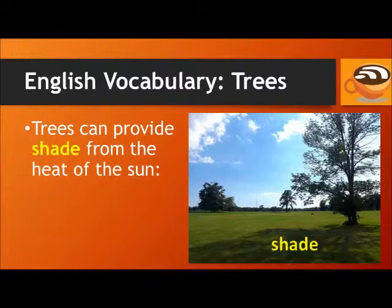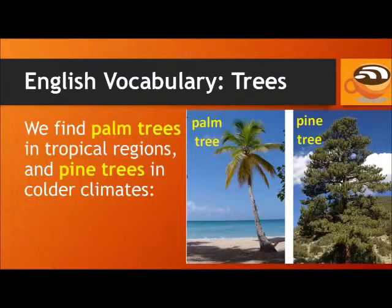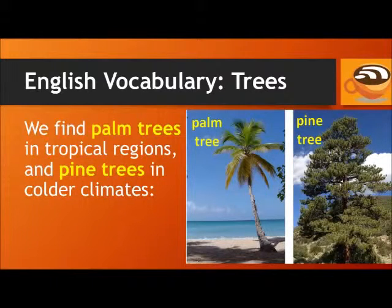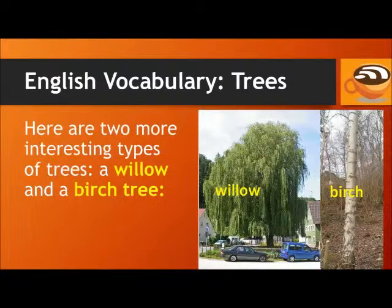Trees can provide shade from the heat and light of the sun. We find palm trees in tropical regions, and pine trees in colder climates. Here are two more interesting types of trees: a willow and a birch tree.